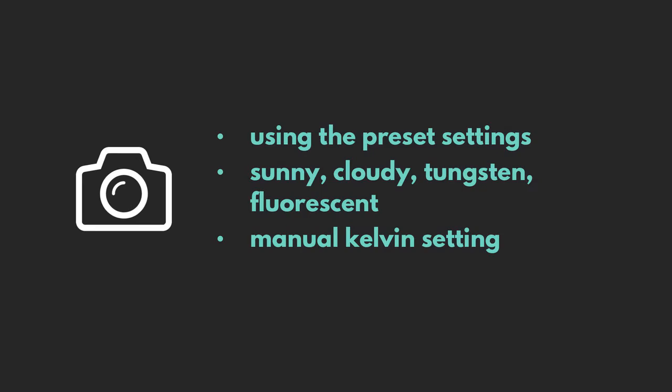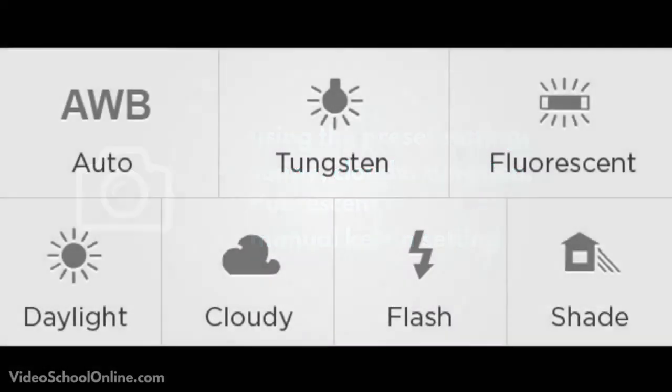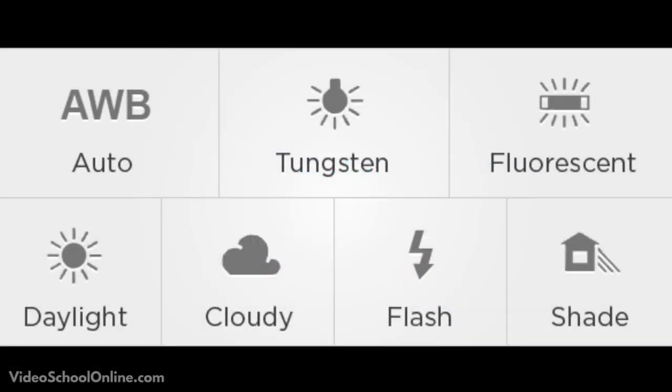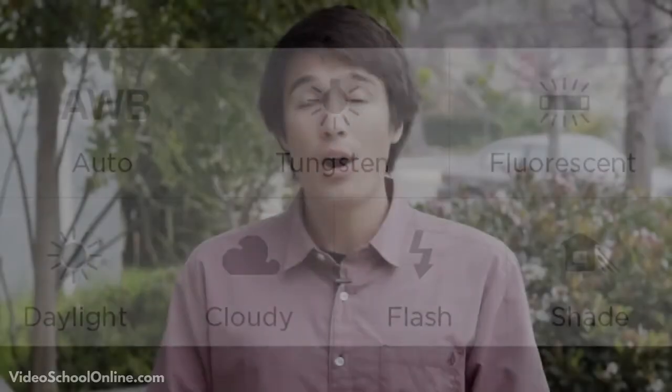You'll see a lot of times that there's a little sun symbol, cloud symbol, and light bulb symbol. These are all presets — for example, if it's cloudy outside, you select that preset to get a true white.